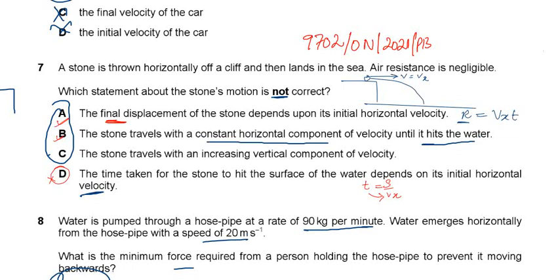Option D: the time taken for the stone to hit the surface of the water depends on its initial horizontal velocity. Looking at the equation: range equals horizontal velocity (Vx) times t.